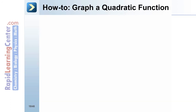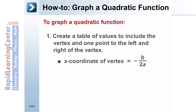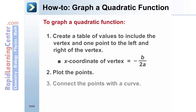How to graph a quadratic function: 1. Create a table of values to include the vertex and one point to the left and right of the vertex. The x-coordinate of the vertex equals negative b over 2a. 2. Plot the points. 3. Connect the points with a curve.